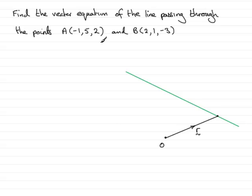Now, we have two known points on the line, and they are the points A, which let's just suppose A was this point. I'll label that as having coordinates minus 1, 5, and 2. So the position vector of A would be minus 1, 5, and 2.